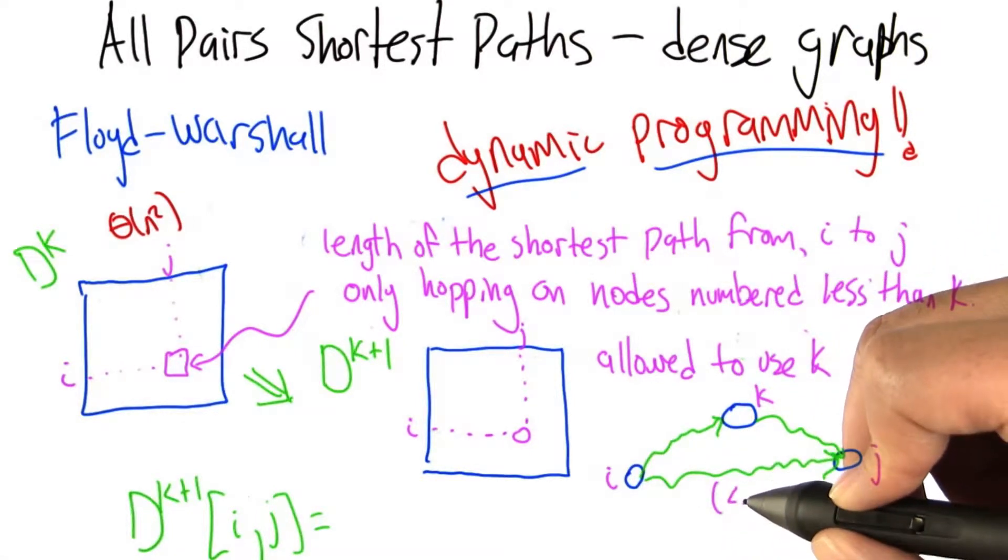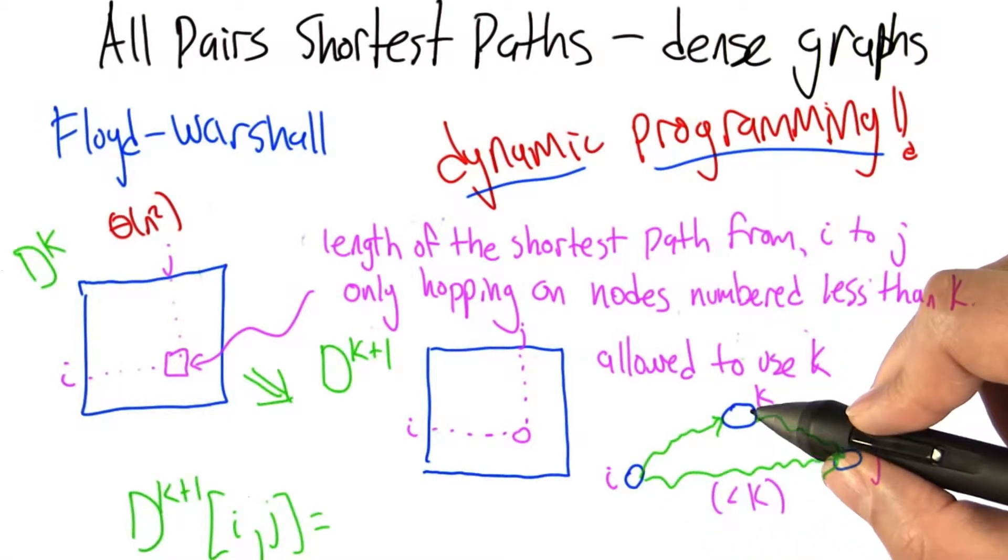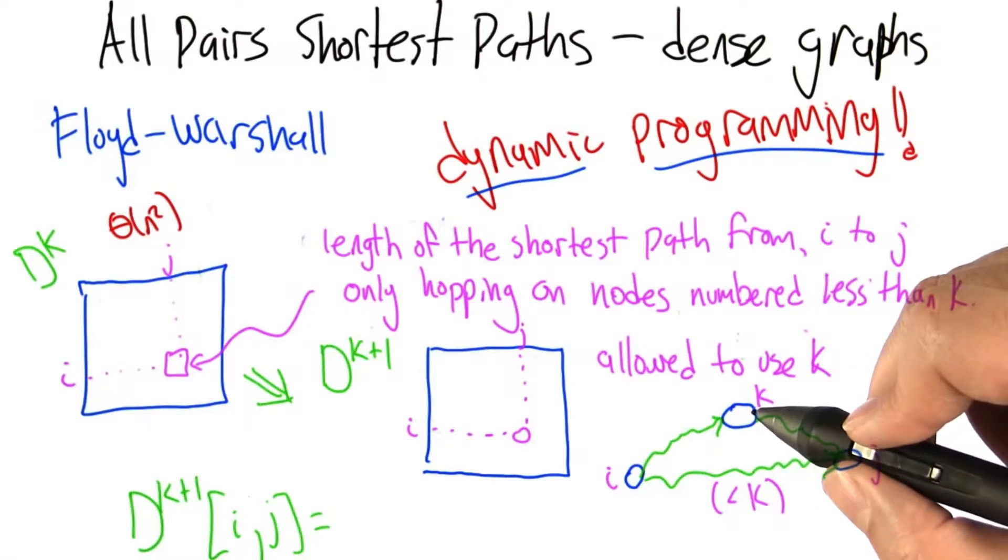It may be that we don't need to use k at all for the smallest path. We just follow a path from i to j only using nodes with values less than k, or we visit k and then go from k to j.